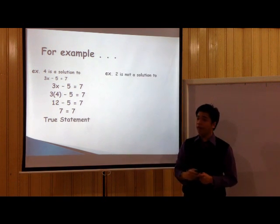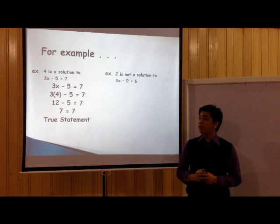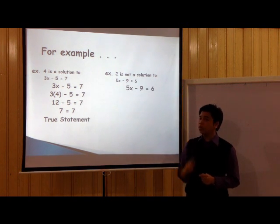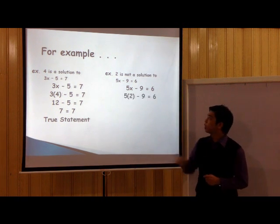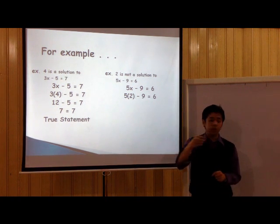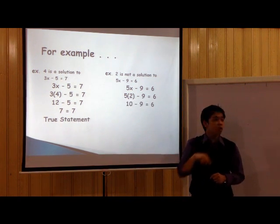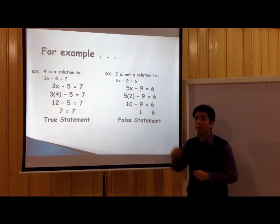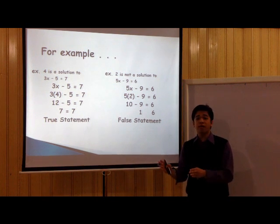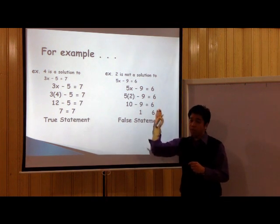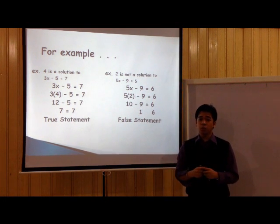On the other hand, 2 is not the solution to 5X minus 9 equals 6. Why? Because if I substitute 2 to X, this will become 5 times 2, which is 10. 10 minus 9 is not equal to 6. 10 minus 9 is 1. 1 is not equal to 6 — so there you have it, a false statement. Once you have a false statement after checking, that means that number is not the solution to the linear equation 5X minus 9 equals 6.